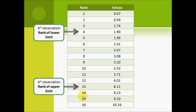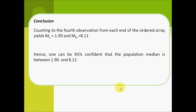Counting 1, 2, 3, 4 from the top gives the rank of the lower limit, and 1, 2, 3, 4 from the bottom gives the rank of the upper limit. The value for the fourth observation rank of lower limit is 19.0, and the rank of upper limit is 81.1. As a conclusion, counting the fourth observations from each end of the order array yields ML equal to 19.0 and MU equal to 81.1. One can be 95% confident that the population median is between 19.0 and 81.1.